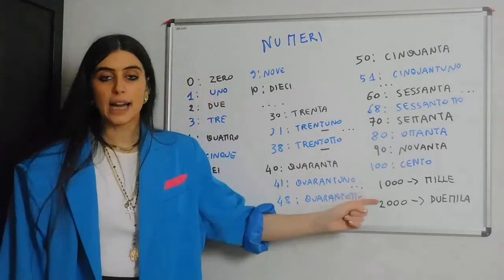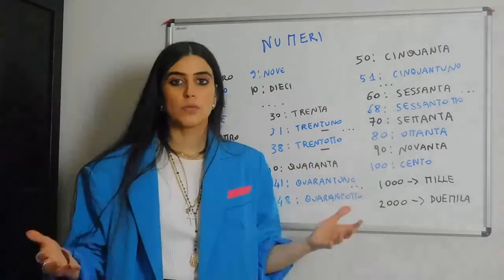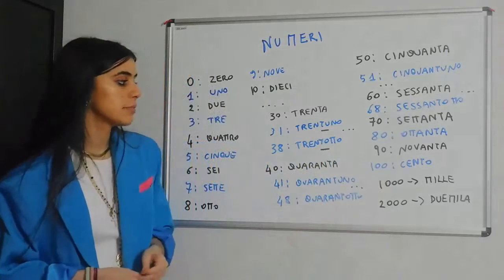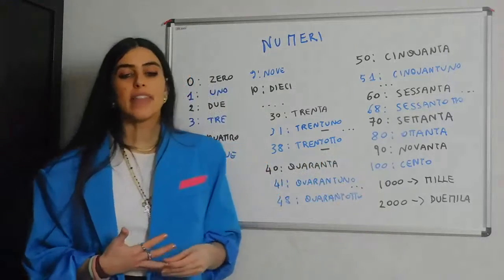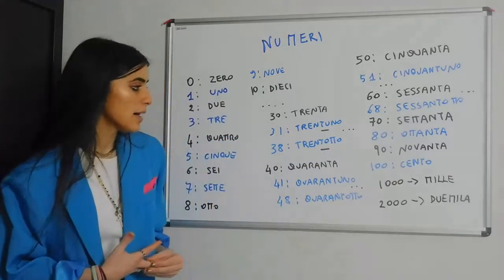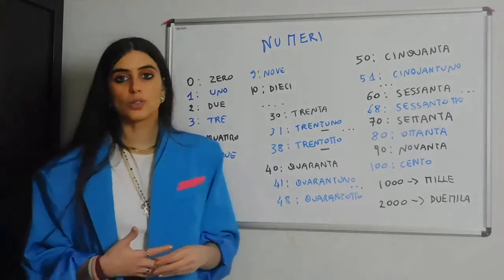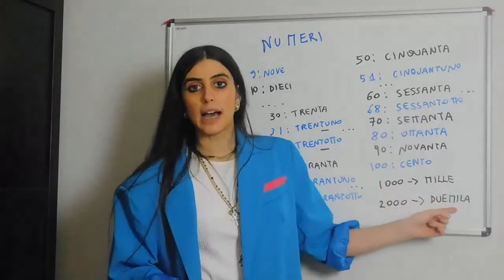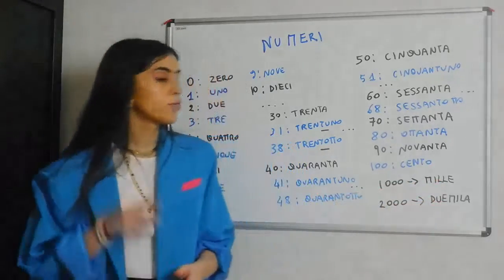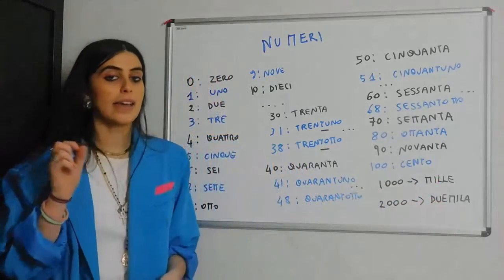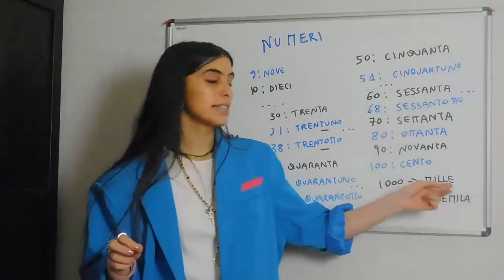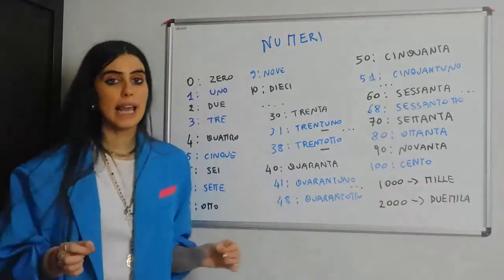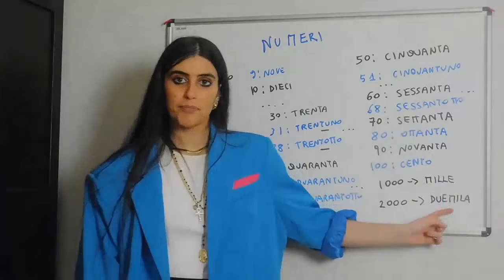For 'mille': one thousand is 'mille'. From two thousand onward, 'mille' becomes 'mila' — so we have one L and an A instead of two L's and an E. So: mille, but duemila.